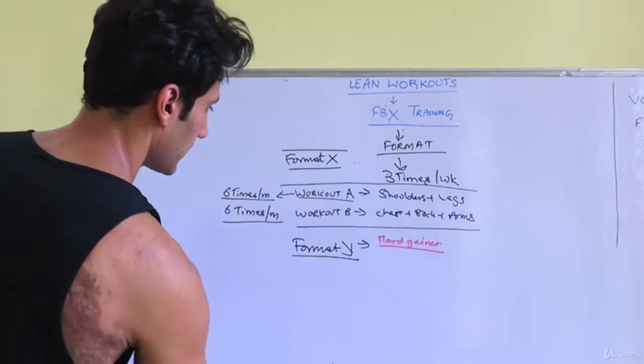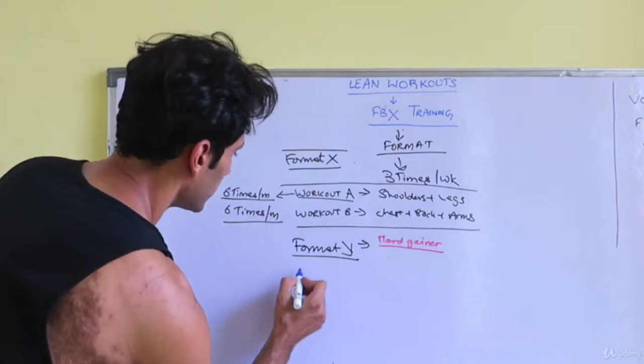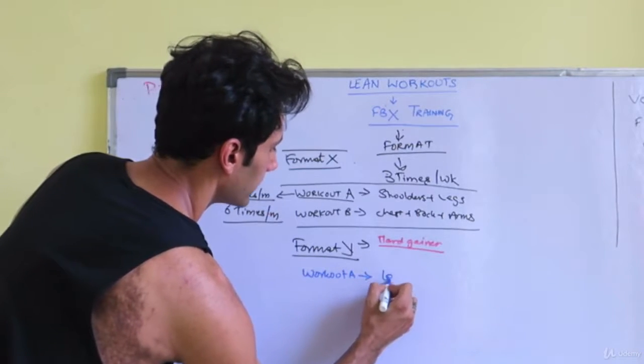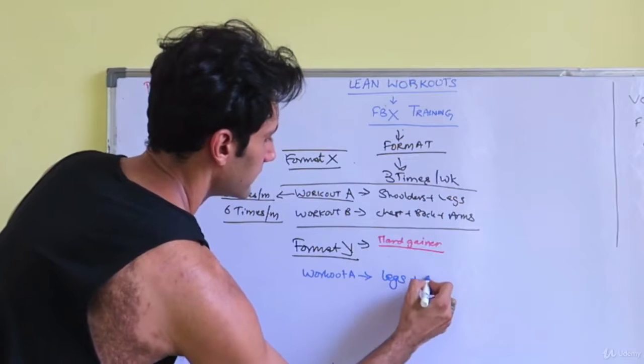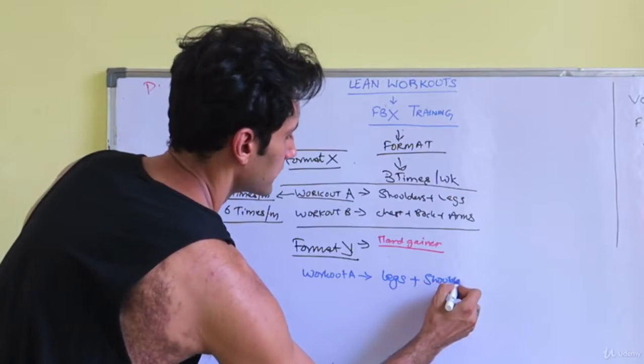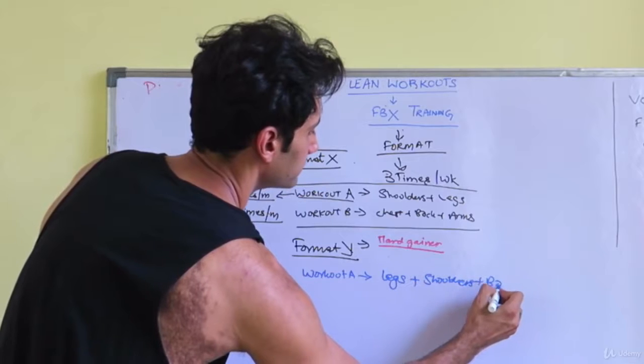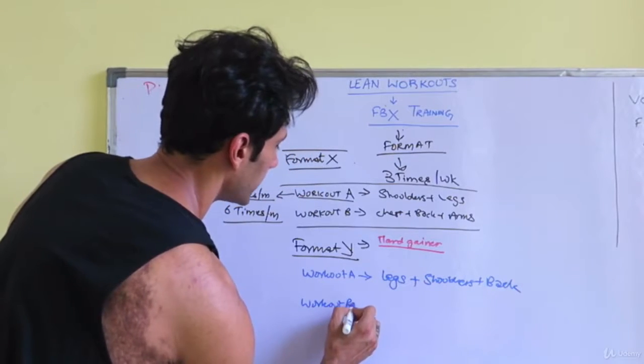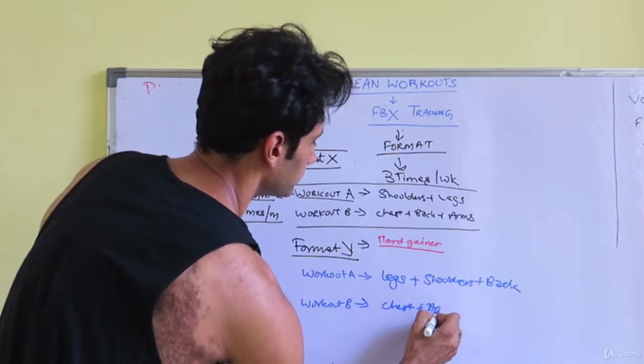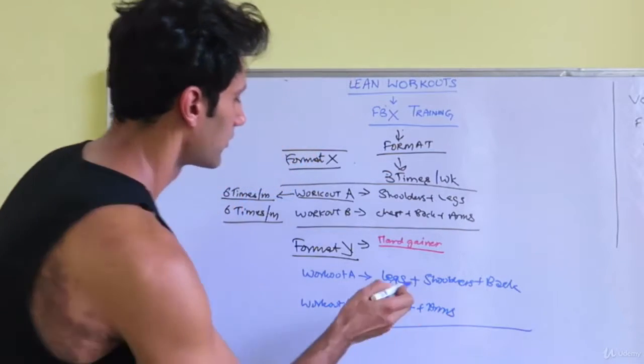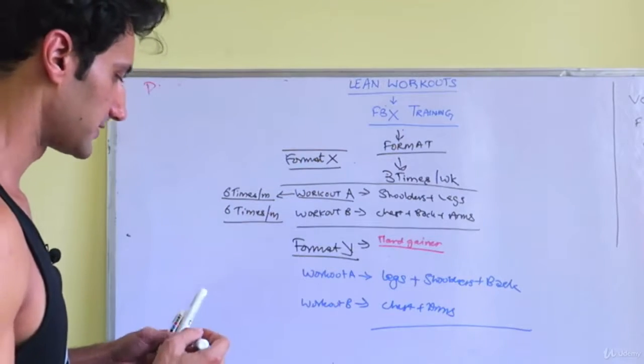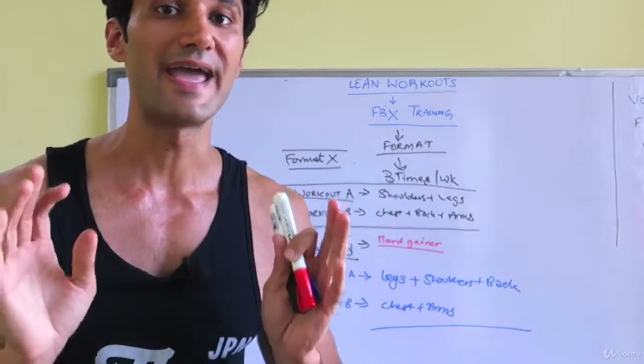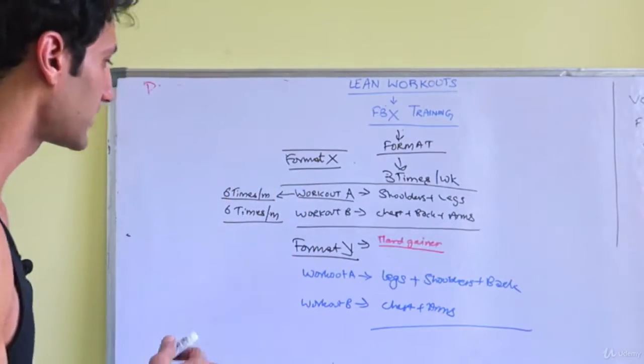Format Y is for hard gainers. What's different about format Y? In your workout A, you start off with legs, then you do shoulders, then you do back. In workout B, you're training your mirror muscles: chest and arms.